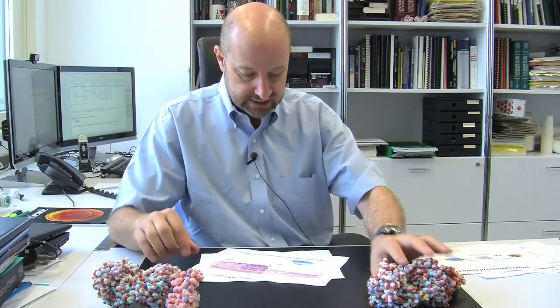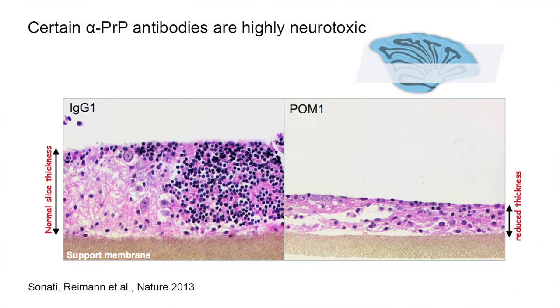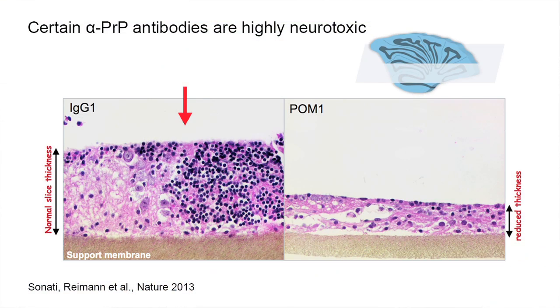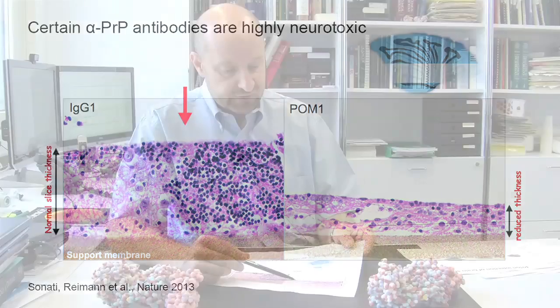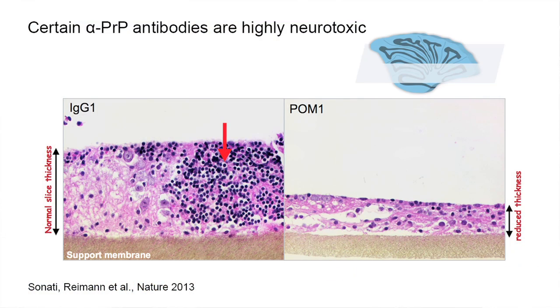Here we have subjected a brain slice — a cerebellar organotypically cultured slice — to the antibody. You can see the thickness of the normal slice attached to a membrane. However, upon delivery of the antibody, the cerebellar granule neurons — the nerve cells in the cerebellum — are completely disappeared; they have been destroyed by the antibody. Also, the slice thickness has been reduced by more than half. These antibodies are very toxic.